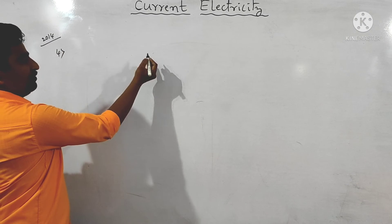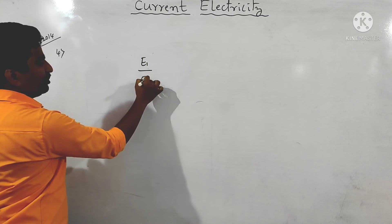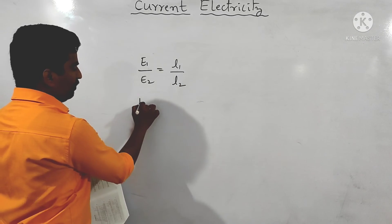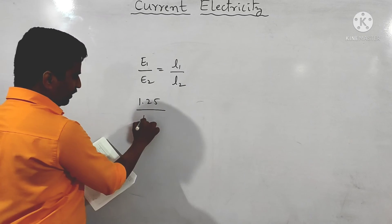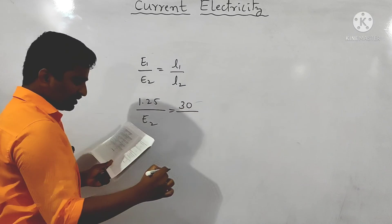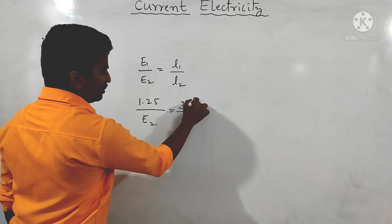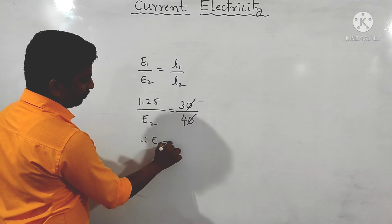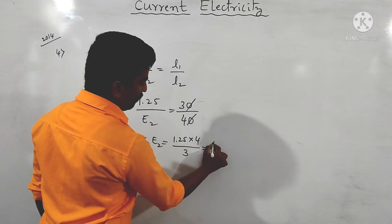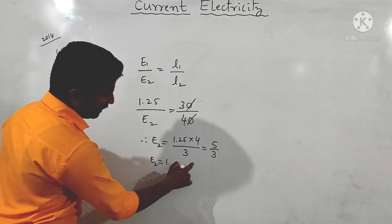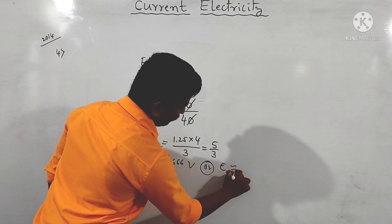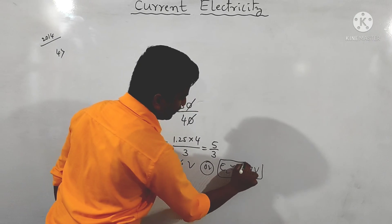We know that the ratio of EMFs equals the ratio of balancing lengths: E1/E2 = L1/L2. Here E1 = 1.25 V, L1 = 30 cm, L2 = 40 cm. Solving: E2 = 1.25 × 40/30 = 1.25 × 4/3 = 5/3 ≈ 1.67 volt. This is the answer.